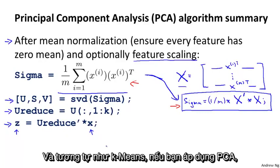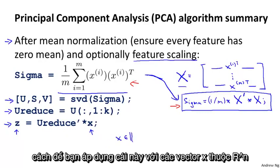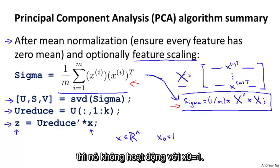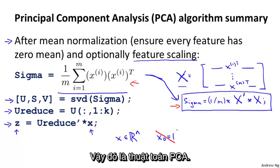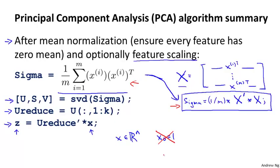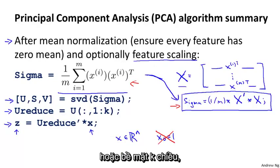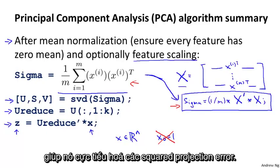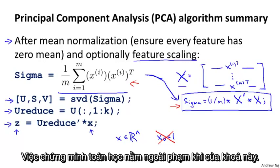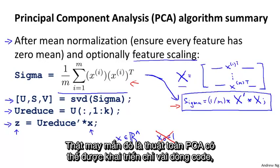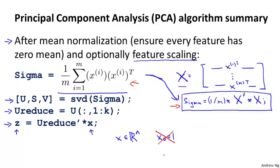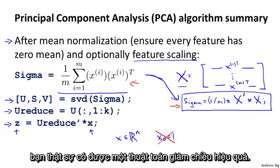That was the PCA algorithm. I didn't give a mathematical proof that this procedure actually gives the projection of the data onto the k-dimensional subspace that minimizes the squared projection error — the mathematical proof of that is beyond the scope of this course. But fortunately, the PCA algorithm can be implemented in not too many lines of octave code, and if you implement this in Octave or MATLAB, you get a very effective dimensionality reduction algorithm.